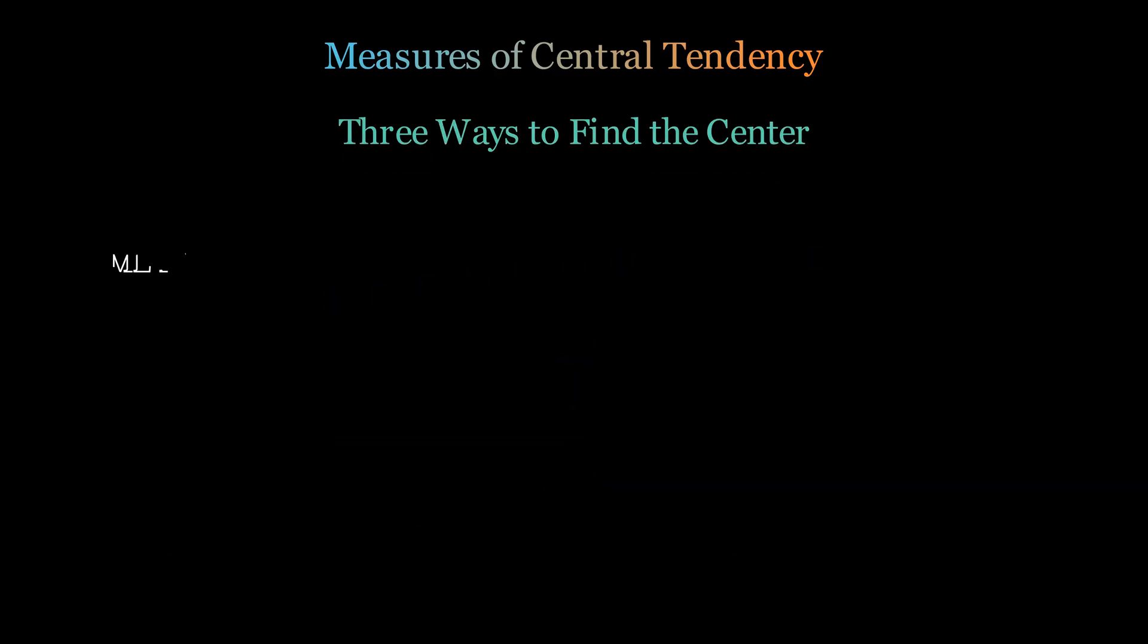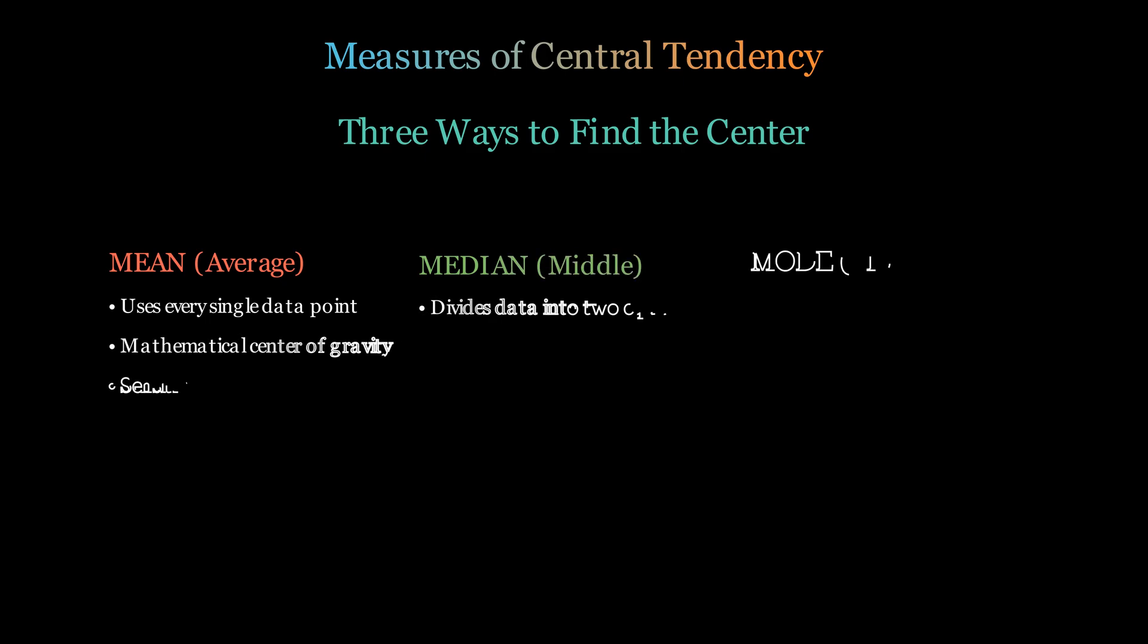We have three powerful ways to find the center of our data, and each tells us something unique. The mean is like a mathematical balance point—it considers every single data point, making it precise but also sensitive to extreme values. Think of it as the center of gravity of your numbers.